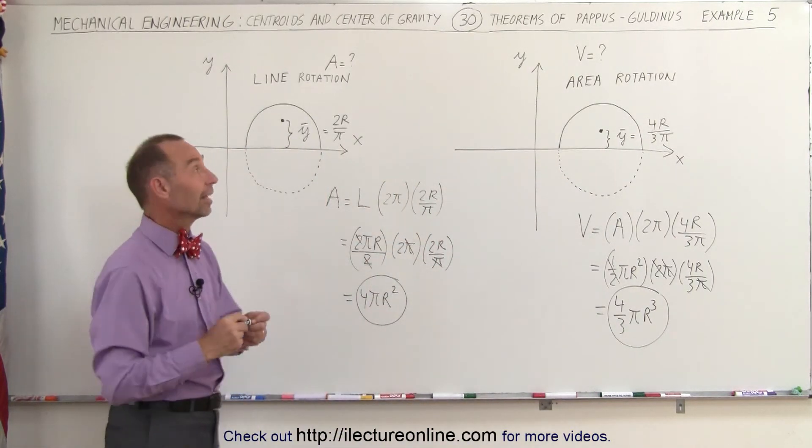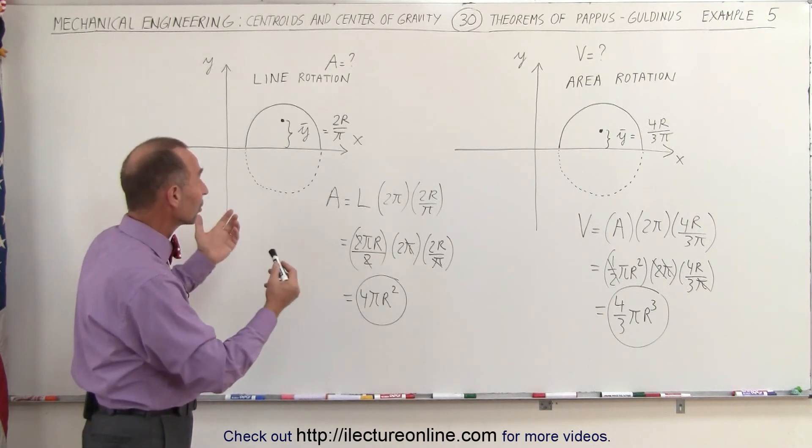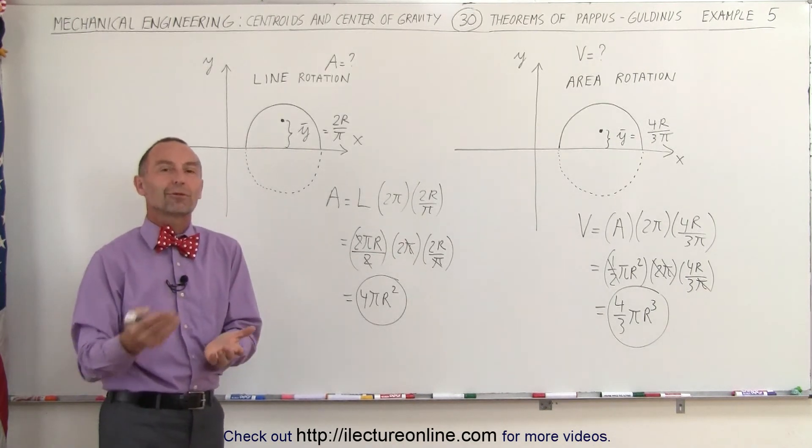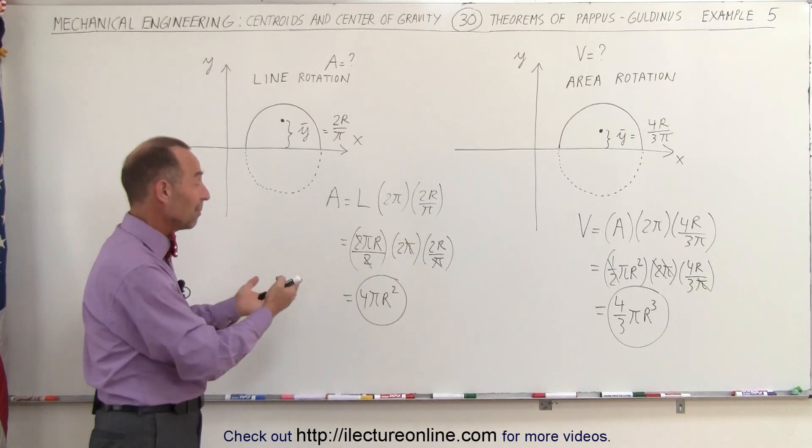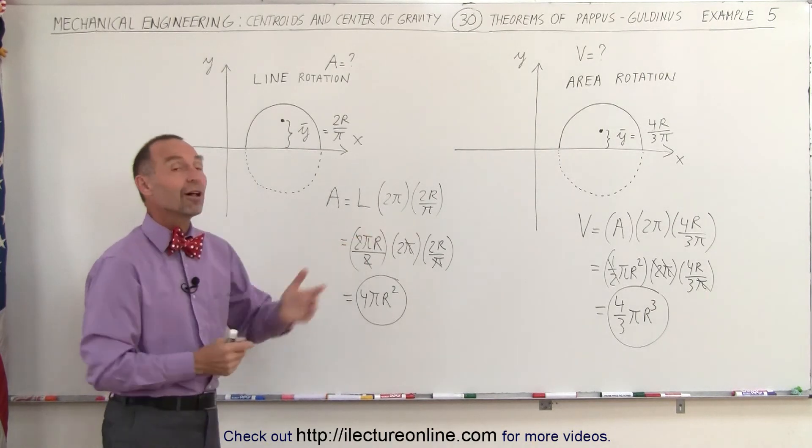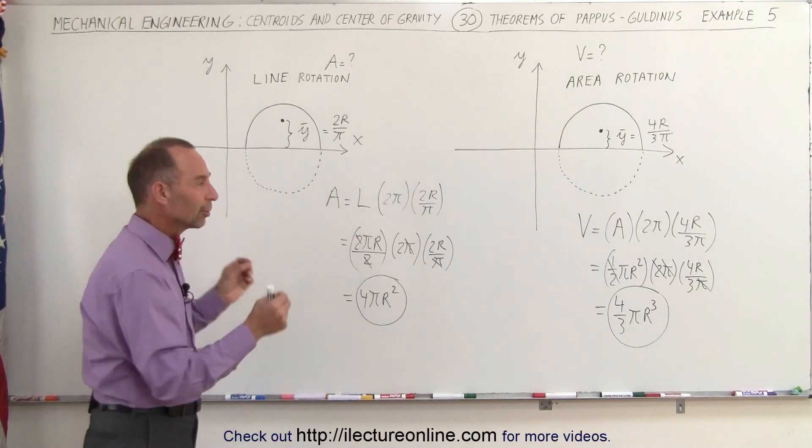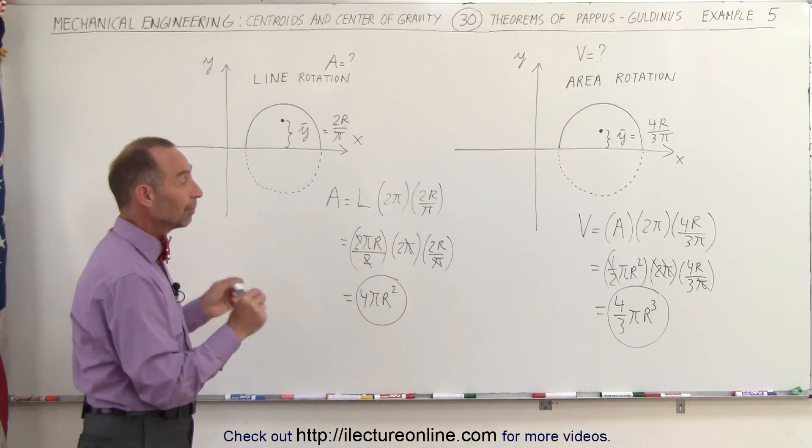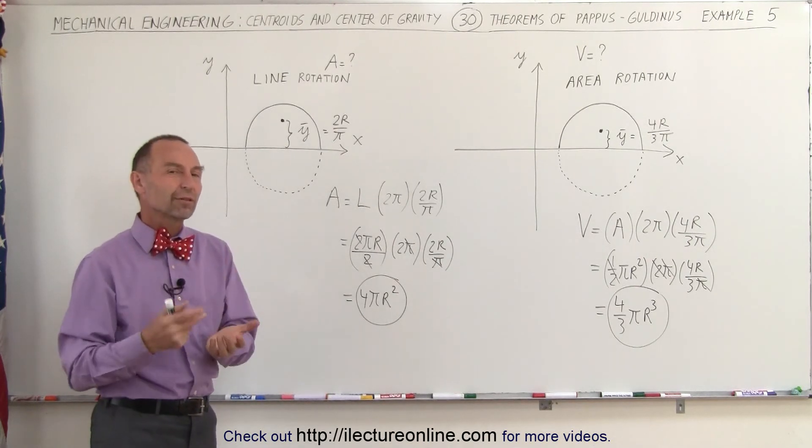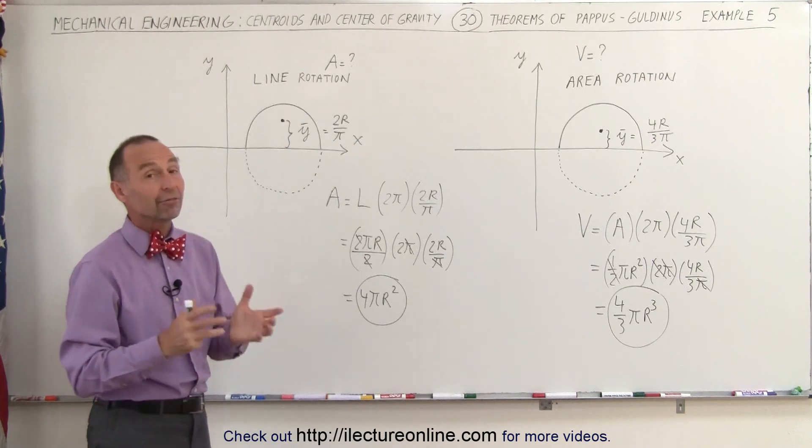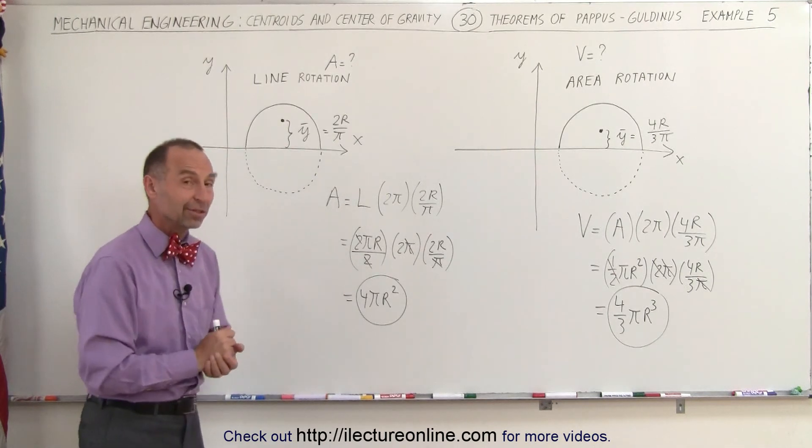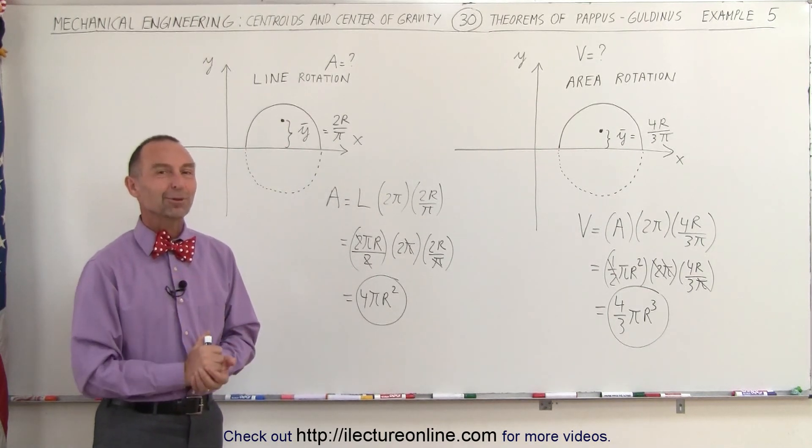So you can see how nicely that Pappus-Guldinus theorem works. Of course, we don't need to use it for spheres, because we know already from memory what the surface area and what the volume is. But here you can see how good those theorems are. And we can apply that to all kinds of other shapes. That would be much more difficult to find the surface area and the volume thereof, if we didn't use this particular technique.